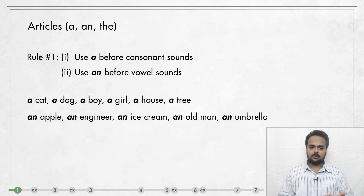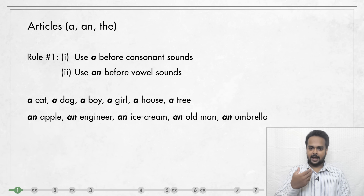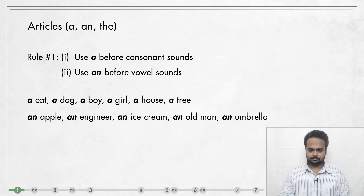So we say a cat, a dog, a boy, a girl, a house, a tree, etc. Notice that in natural speech, we don't say A, we say 'a', like 'a cat'.